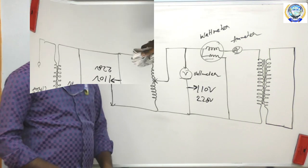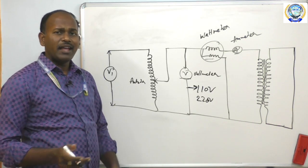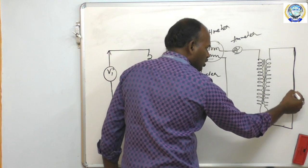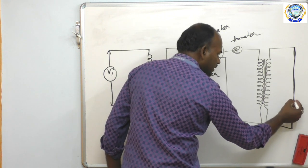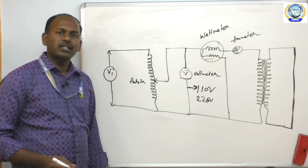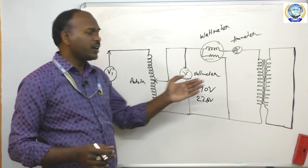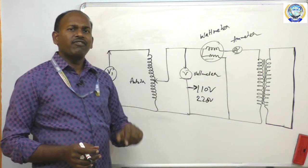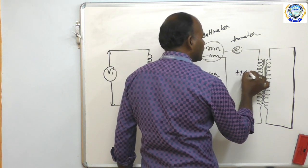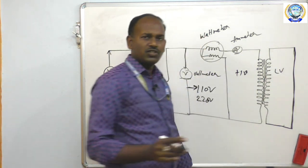Now let us consider the short circuit test. The circuit diagram for the open circuit test and short circuit test are the same with a simple difference: previously the secondary was open-circuited, and now it is short-circuited. In the same manner, either side of the transformer you connect the meters and short circuit, but preferably on the high voltage side you connect meters and the low voltage side is short-circuited.